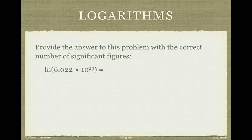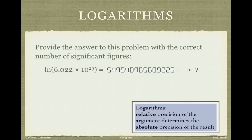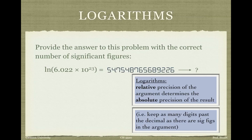Logarithms are the opposite of exponents, so the rules work in reverse. To take the natural logarithm of 6.022 times 10 to the 23rd, the calculator gives a long number. The exponentiation rule works exactly in reverse: the relative precision — the number of sig figs in your argument — tells you the absolute precision, or the number of digits past the decimal in your result. With four sig figs in the argument, we keep four digits past the decimal, giving 54.7549. This seems counterintuitive — four sig figs in, six sig figs out — but the 54 before the decimal just tells you where the decimal point is; it's the 0.7549 that encodes the actual precision.